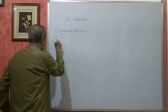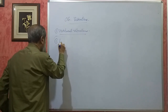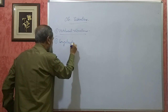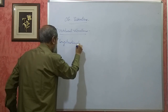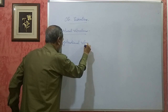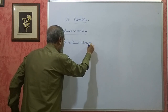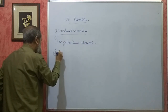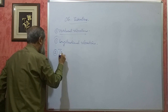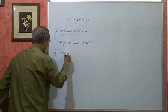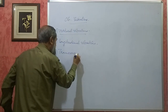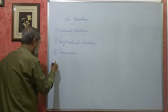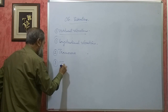Natural vibrations are further classified into three types: longitudinal vibrations, transverse vibrations, and torsional vibrations.